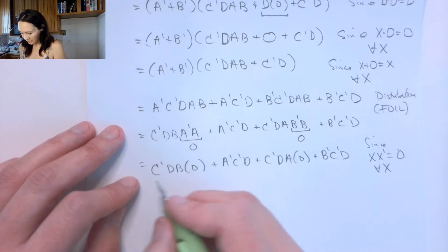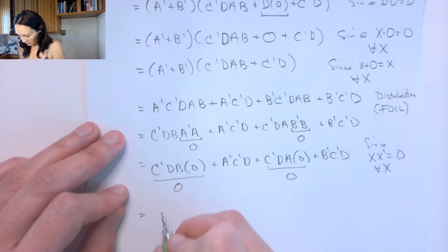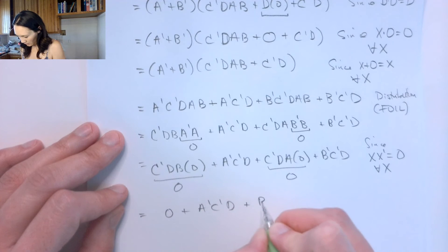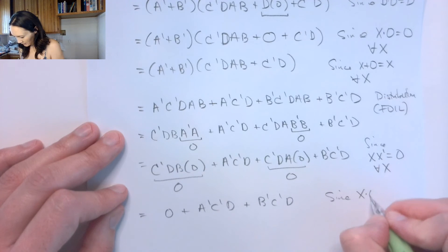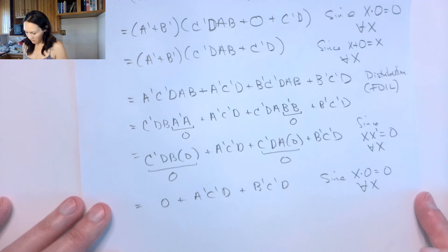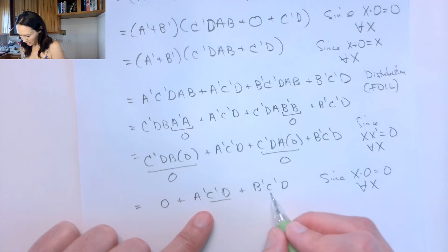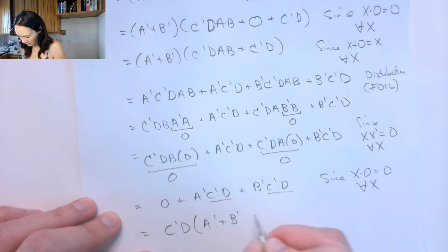All these terms that are getting ANDed with zero are going to be zero. So this gives us: zero, or Ā·C̄·D, or zero, or B̄·C̄·D — since anything ANDed with zero is zero for all X. Then I see both remaining terms share C̄ and D, so I can factor that out: C̄D times (Ā OR B̄).